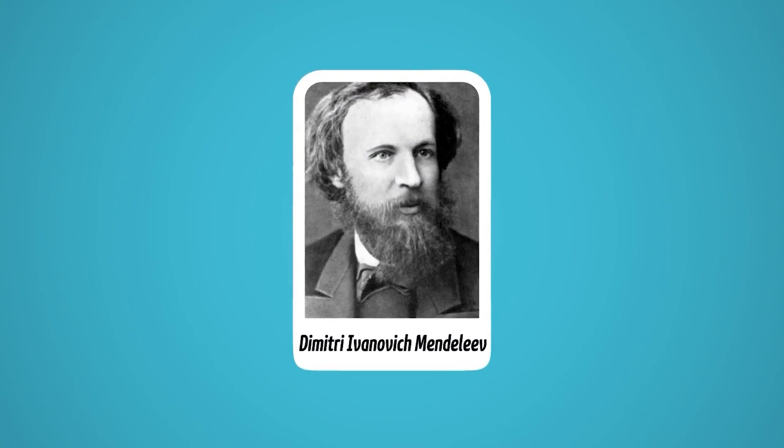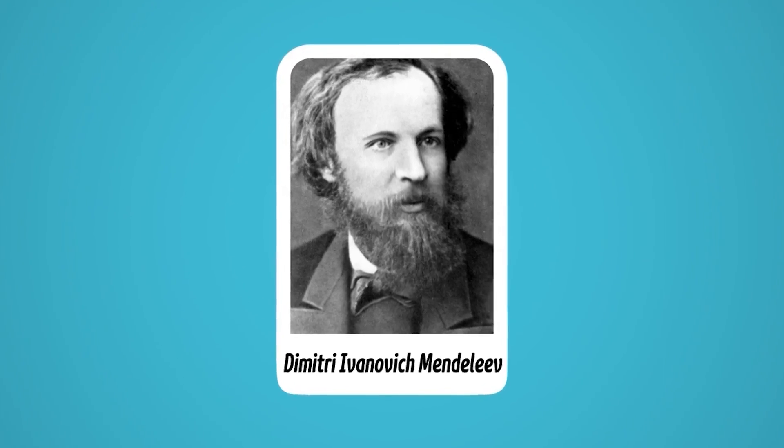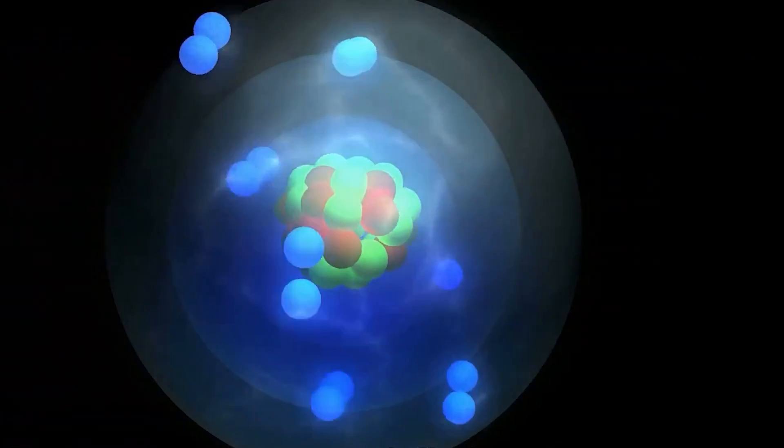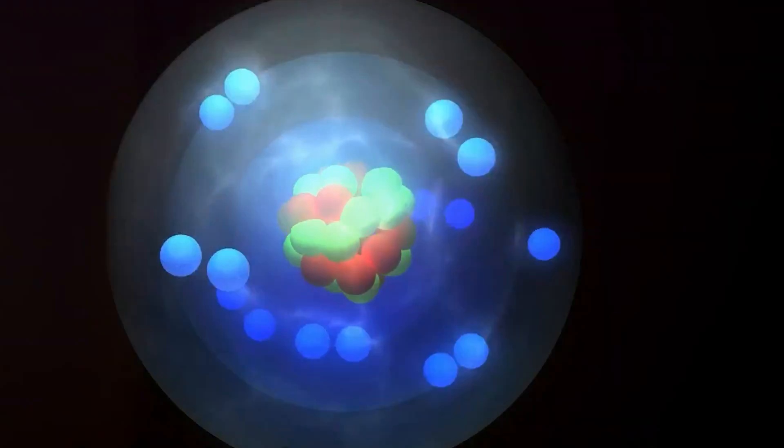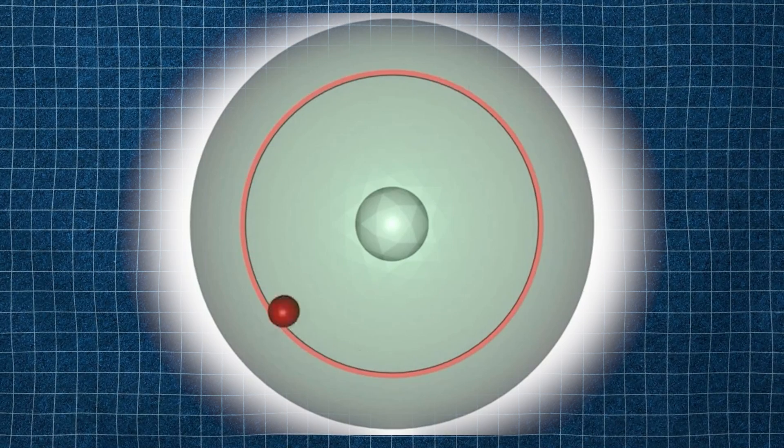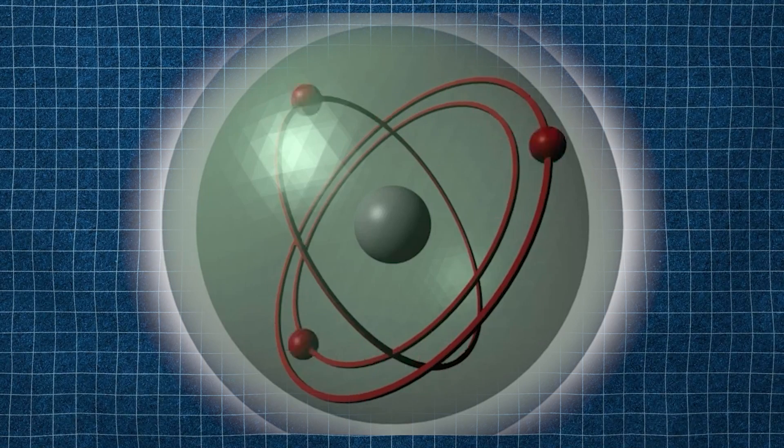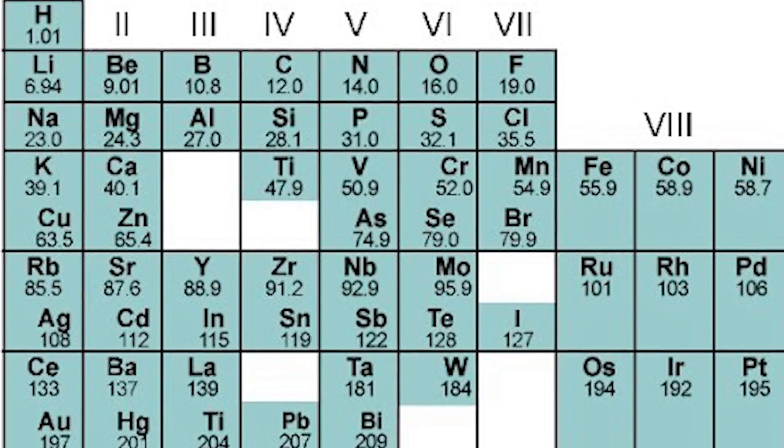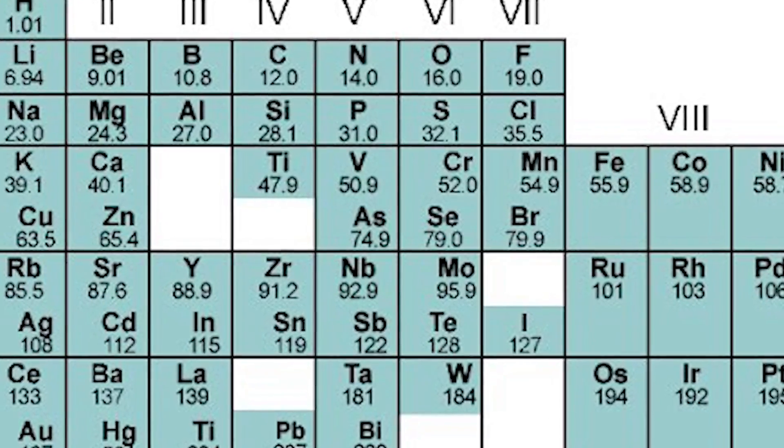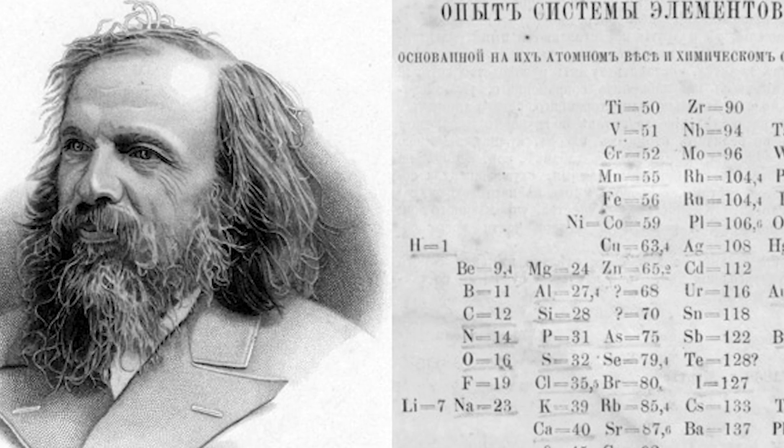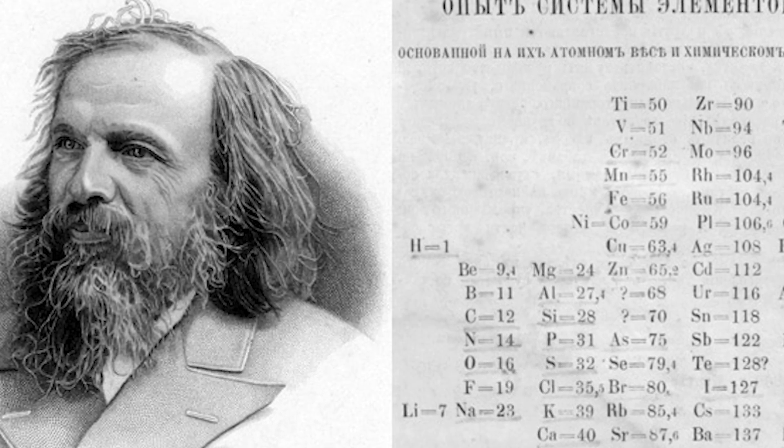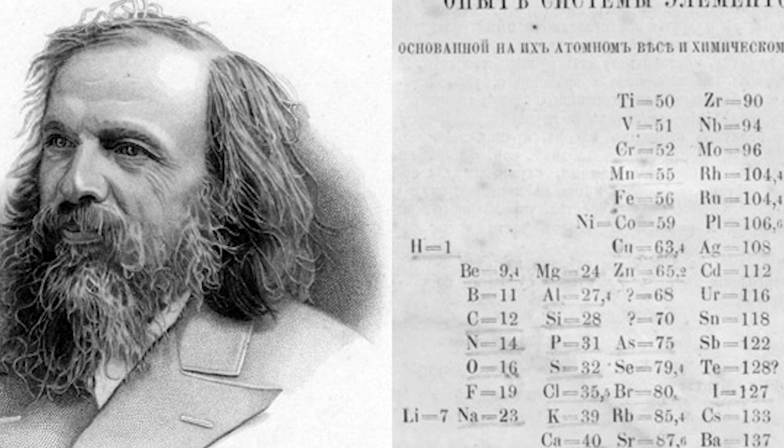The story begins when Mendeleev developed the periodic table. He arranged the known elements by their atomic weight and observed that chemical properties recurred periodically as atomic weight increased. We now understand that these chemical properties depend on the number of valence electrons, which increase by one with each additional proton in the nucleus until the electron shell fills and the next shell begins to fill. Although Mendeleev didn't know about protons, he noticed gaps in his periodic table. He correctly interpreted these gaps as elements yet to be discovered and even predicted many of their properties.